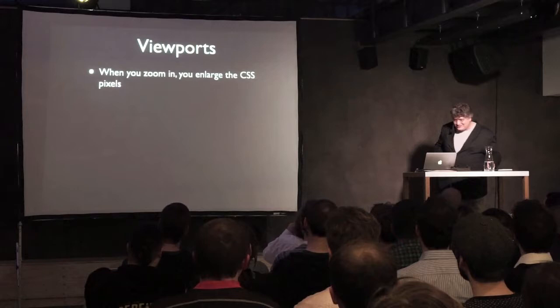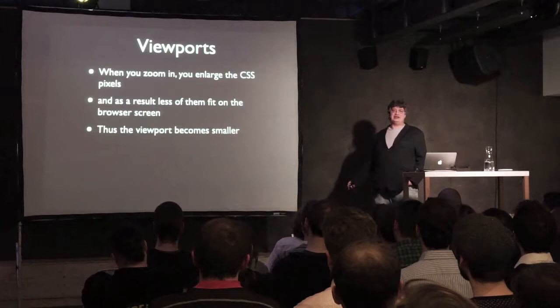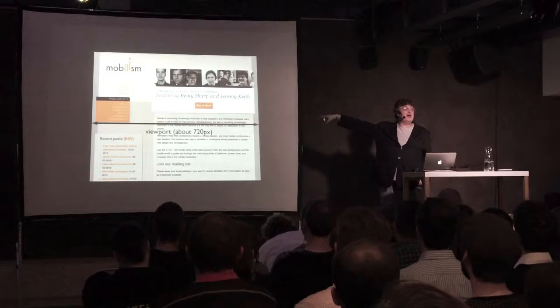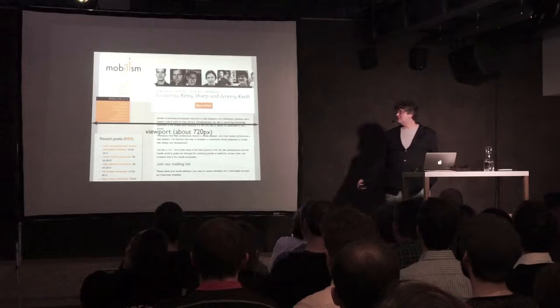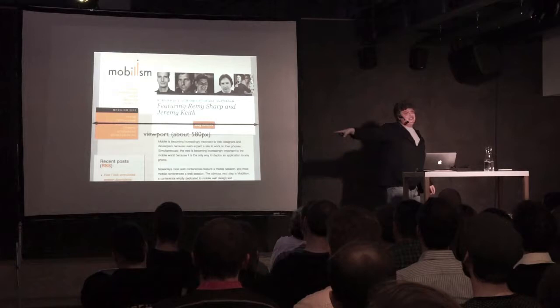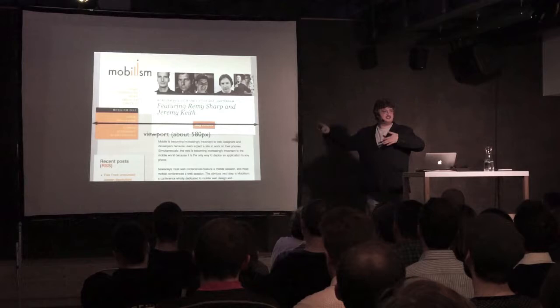When you zoom in, you enlarge the CSS pixels, and the result is that fewer of them fit on the screen — the viewport becomes smaller. This may be slightly counterintuitive, but it's happening all the time. Looking at the website: the viewport is roughly 720 pixels wide. When we zoom in, all individual CSS pixels grow larger, fewer fit in the browser window, and the viewport becomes about 580 pixels. That's what happens on desktop when you zoom: you make the viewport smaller, which recalculates all CSS percentages.